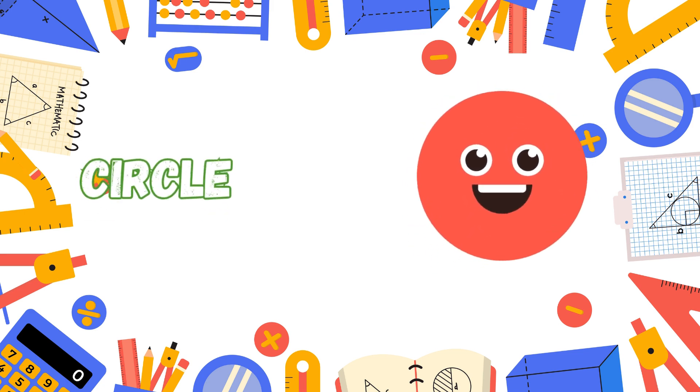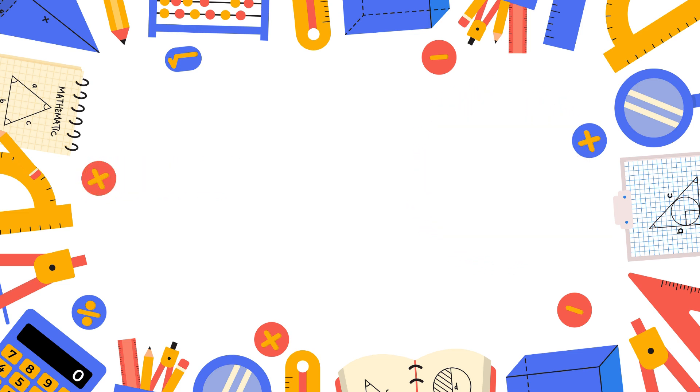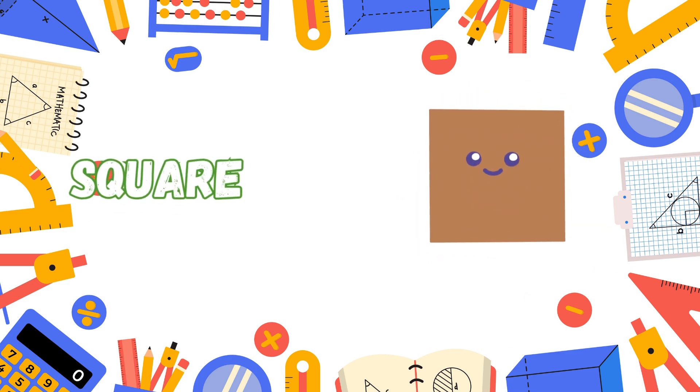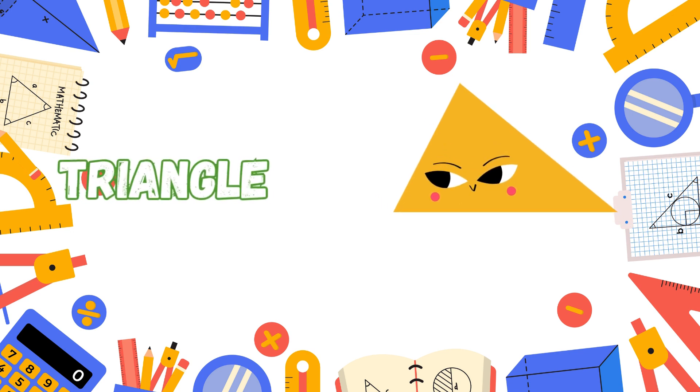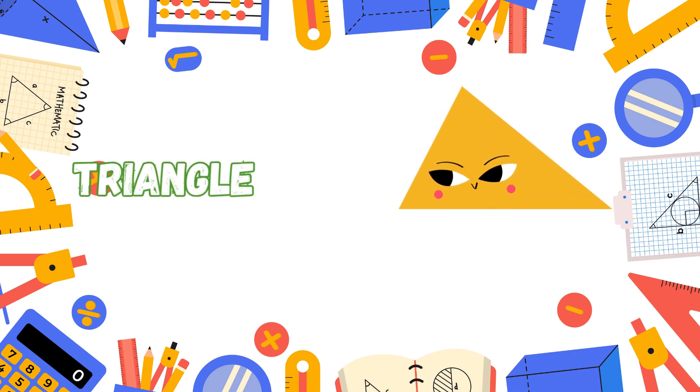Circle, circle, round and round, a perfect loop, no end to be found. Square has four sides, all the same. Each corner sharp, that's its fame. Triangle has three sides to see, a strong shape in geometry.